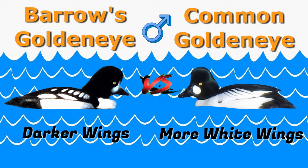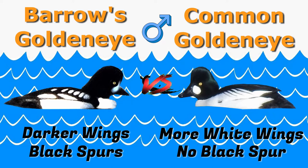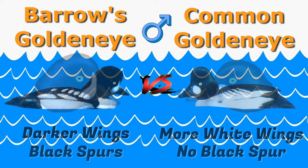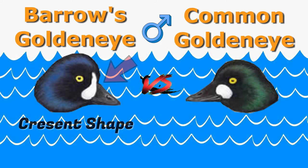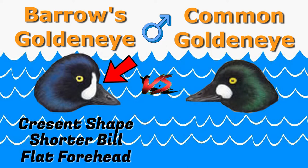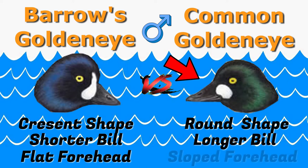Also, the Barrows golden eye has a black spur of feathers here, where the common golden eye does not. Upon closer inspection of the two male golden eyes, you'll notice the male Barrows golden eye has a white crescent on its face — it kind of looks like a teardrop. It also has a shorter bill and a flatter forehead. As you can see on the common golden eye, the patch on its face is more round. It also has a longer bill and a more sloping kind of forehead.